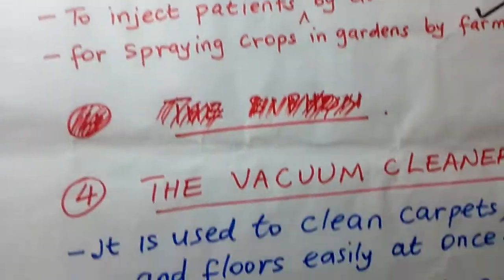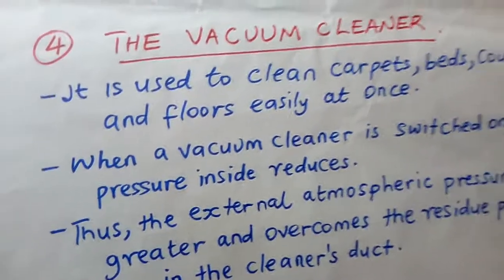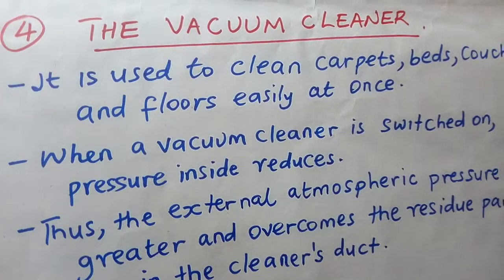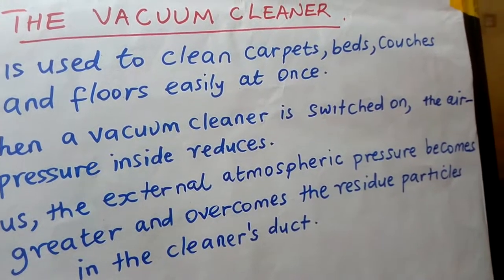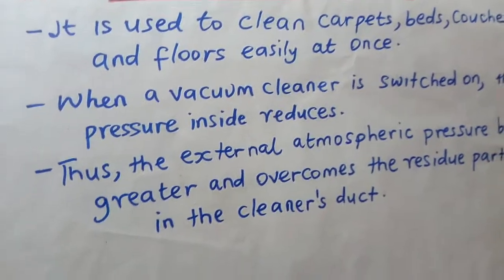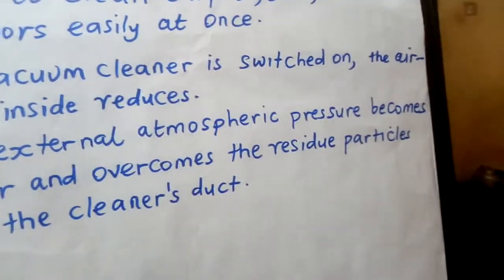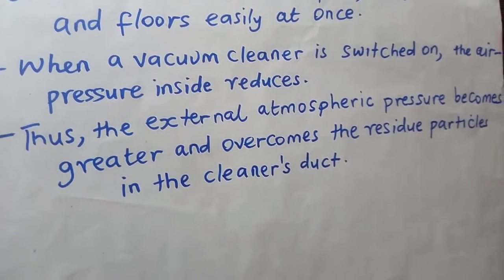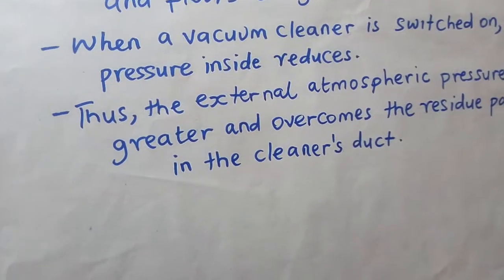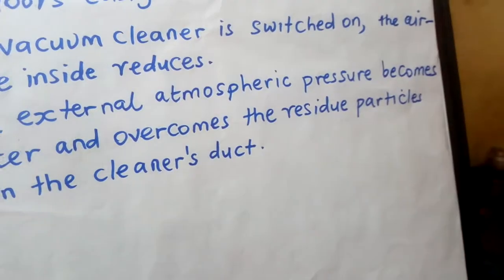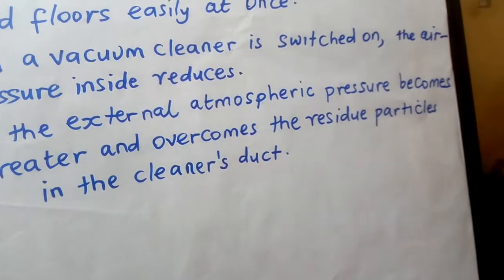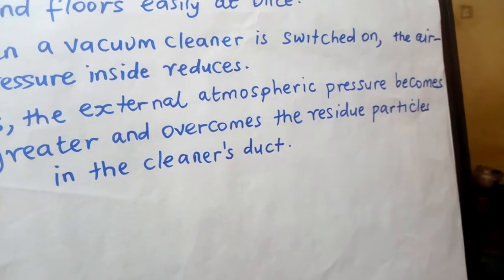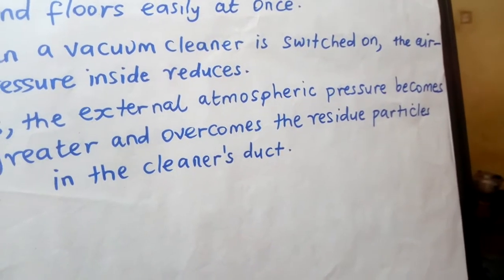Another application of atmospheric pressure is the vacuum cleaner, which is used to clean carpets, beds, couches, and floors easily all at once. When a vacuum cleaner is switched on, the air pressure inside reduces. Once the pressure inside reduces, the pressure outside becomes greater. The greater external atmospheric pressure overcomes the residue particles in the cleaner's ducts, forcing dust and dirt to be collected.